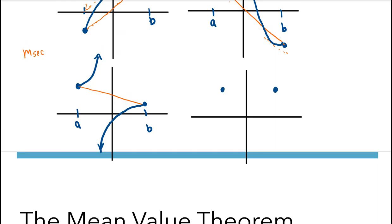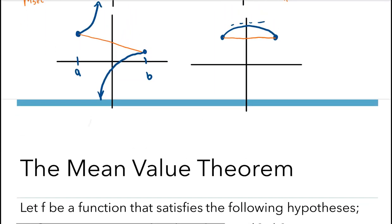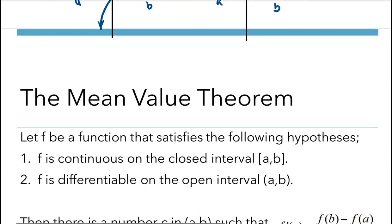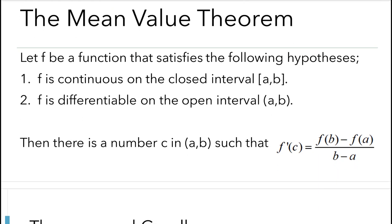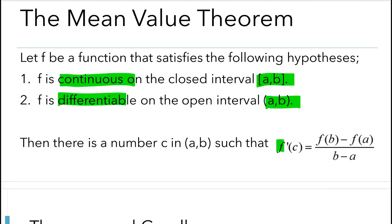Let's get down to our theorem — the Mean Value Theorem. We have hypotheses we must take into account, but this time we only have two. We don't need the heights to be the same, because when they were the same we already knew the slope of the secant line was zero — that was Rolle's Theorem with f(a) = f(b). Now we just need f to be continuous on the closed interval and differentiable on the open interval. Then there exists some number c between a and b such that the derivative f'(c) equals the slope of the secant line: f(b) minus f(a) over b minus a.